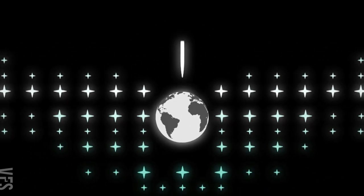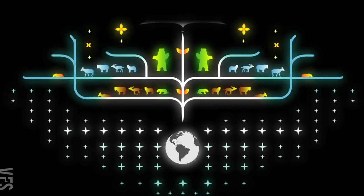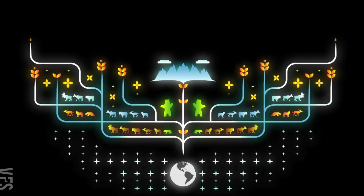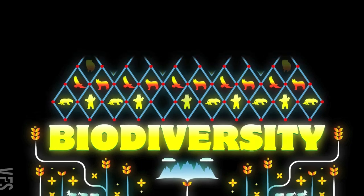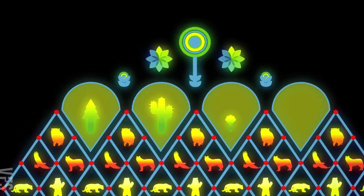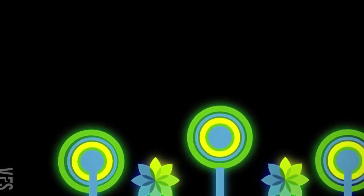Life on this planet is made up of a beautiful but very fragile web of interconnected species and environments. We call this biodiversity and it is the collection of all the different genes, species and ecosystems in a region.